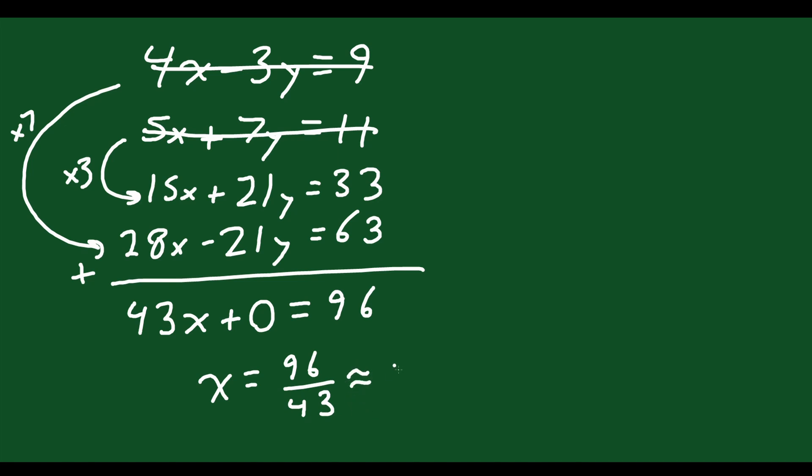So that's your x value. And that's equal to approximately 2.23. It's a long decimal, right? It keeps going, but you can leave it as a fraction if you want. Now let's say you want to solve for your y value this time. That means we have to eliminate the x's.